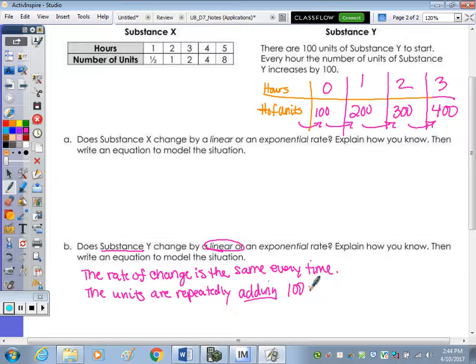Good. So substance X, what's going on here with our values? Multiplying by two. Multiplying by two. So that would mean it's doubling, which is linear or exponential? Exponential. Exponential. And we could say, units are repeatedly multiplying by two.